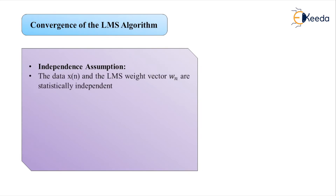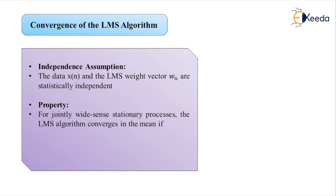The first property: for jointly wide-sense stationary processes, the LMS algorithm converges in the mean if mu is greater than 0 but less than 2 divided by lambda_max, and the independent assumption is also satisfied.